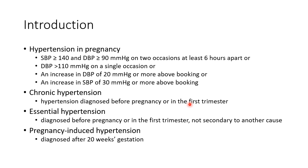Chronic hypertension is hypertension diagnosed before pregnancy or in the first trimester. Essential hypertension is hypertension not secondary to another cause. Pregnancy-induced hypertension is hypertension diagnosed after 20 weeks gestation. The two key definitions to remember: hypertension in pregnancy is systolic BP ≥140 mmHg and diastolic BP ≥90 mmHg on two occasions at least six hours apart; pregnancy-induced hypertension is hypertension diagnosed after 20 weeks gestation.